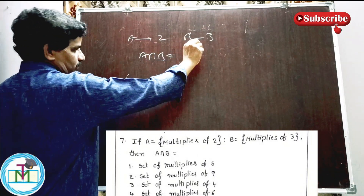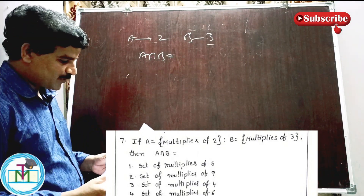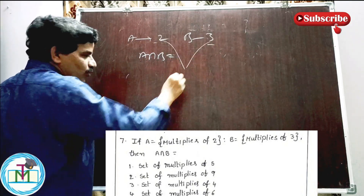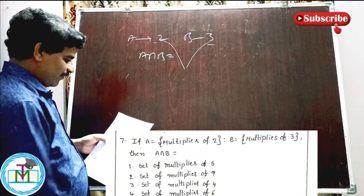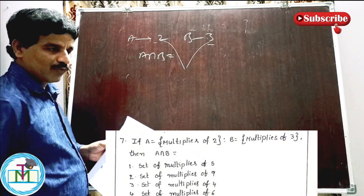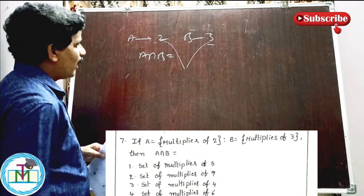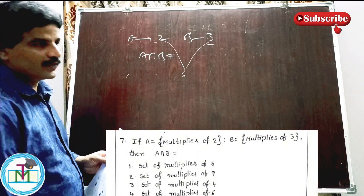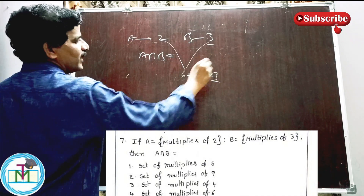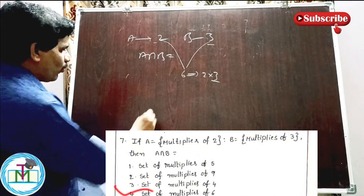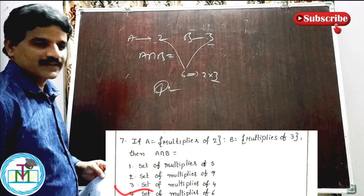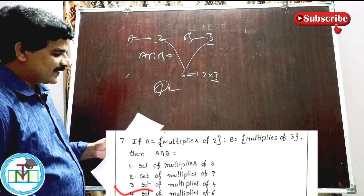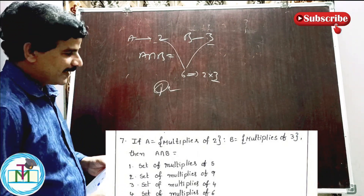Set A contains multiples of 2 and set B contains multiples of 3. For a number to be in A intersection B, both 2 and 3 must divide the number. 2 doesn't divide 5, so option 1 is wrong. 3 doesn't divide 4, so option 3 is wrong. 2 and 3 both divide 6 — that's LCM(2,3) = 6. Therefore A intersection B equals multiples of 6. Option 4 is the right answer.